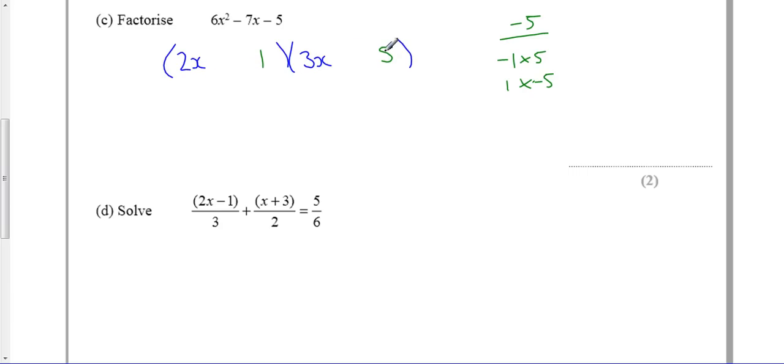Well, 2x times 5 is going to give me 10x, but I want a negative so I think that's going to be negative 10x, and the 3x gives me the 7x, minus 7x. If you want to check it, you can expand it and check that it still works.